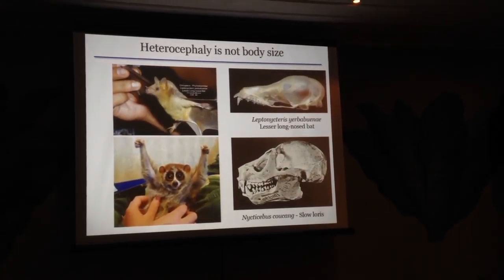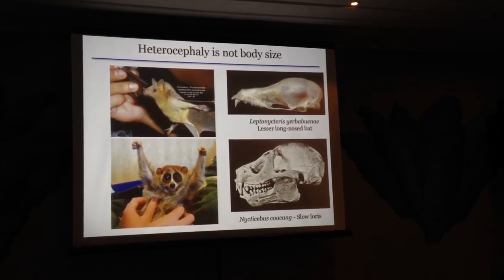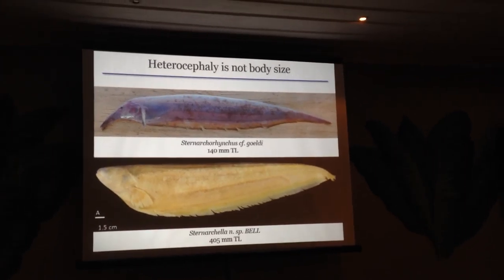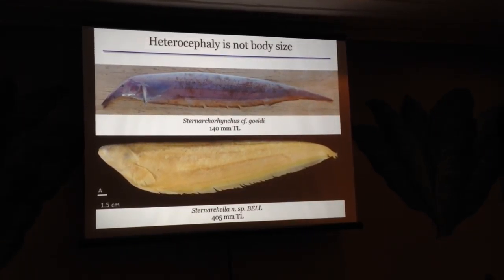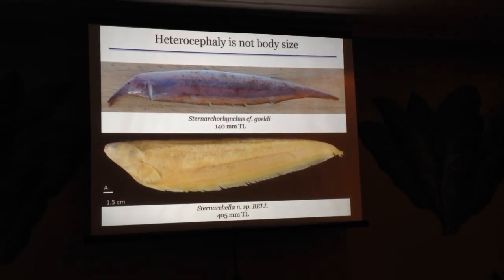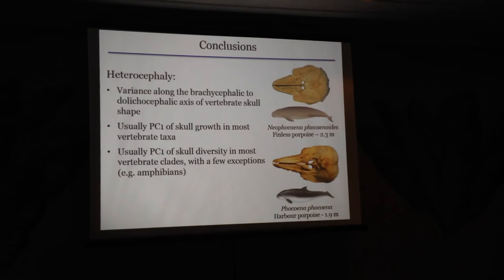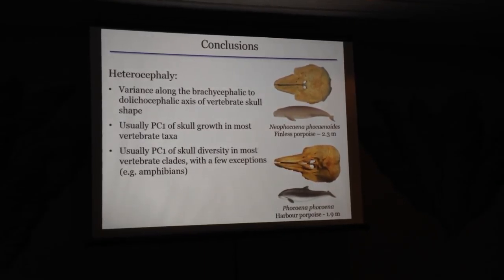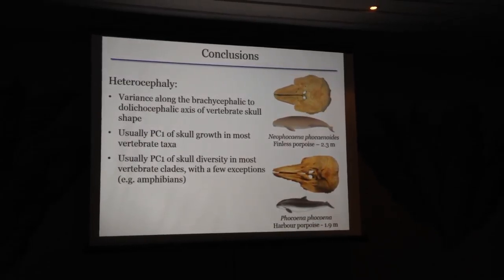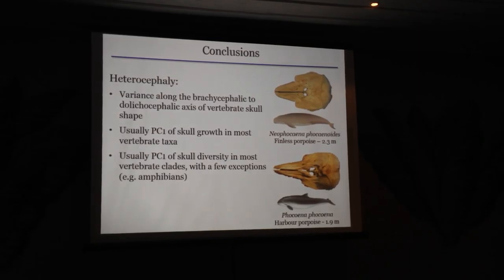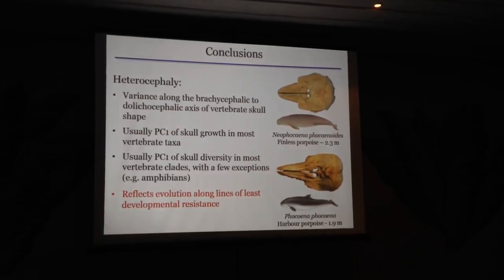One last comment: heterocephaly is not body size. There are many examples of dolichocephalic animals with a much longer snout than larger-bodied relatives. The same thing is true in gymnotid fishes, where we have a relatively smaller-bodied species with a long snout and short-snouted fish with a larger body. So it's an evolutionary phenomenon — not just a trunk-and-snout scaling effect. To summarize: variance along the brachycephaly to dolichocephaly axis is what we're calling heterocephaly. It's usually PC1 of development in most species we've looked at, and usually PC1 of skull diversity — not always, as in hammerhead sharks where it's PC2. In conclusion, we think heterocephaly is an example of evolution along the lines of least genetic resistance. Thanks very much.